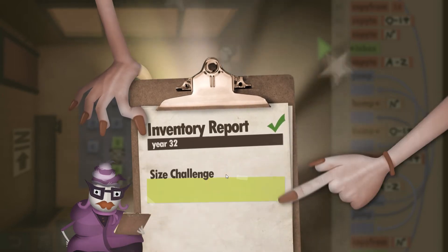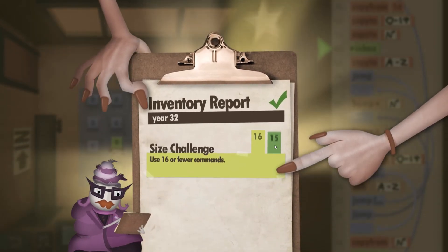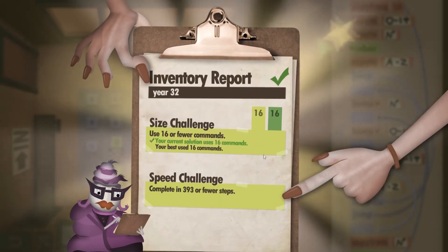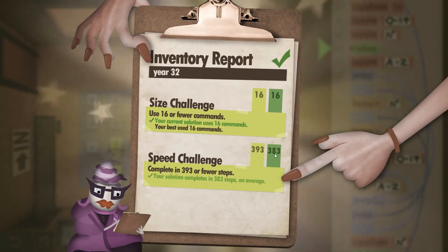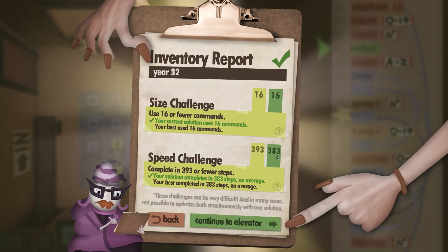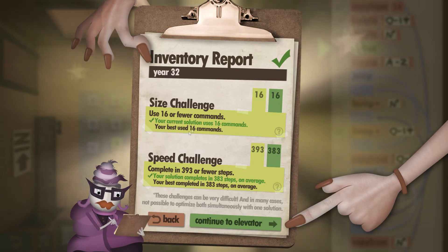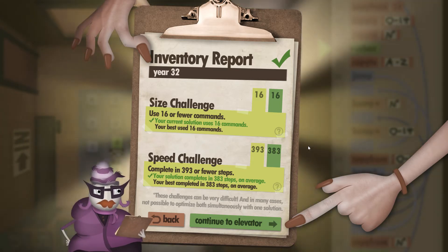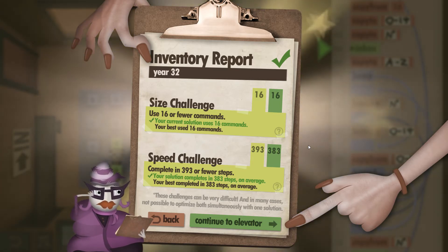Now we just got to wait for the clipboard to come up. Here we are, for the size challenge: 16 out of 16, and for the speed challenge: 283 out of 393. So we passed them both runs. I hope you found this walkthrough helpful, and thank you for watching.